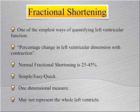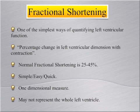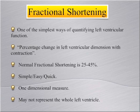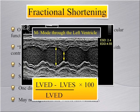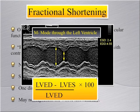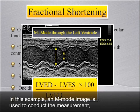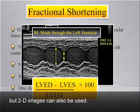Fractional shortening is one of the quickest ways of quantifying left ventricular function. It is defined as the percentage of change in left ventricular dimension with contraction. Normal fractional shortening is 25 to 45%. It is simple and easy to obtain rapidly, but limited in that it is a one-dimensional measure and may not represent the whole left ventricle. It is calculated by subtracting the LV end systolic diameter from the LV end diastolic diameter, then dividing by LV end diastolic diameter and multiplying by 100. An M-mode image is commonly used, but 2D images can also be used.